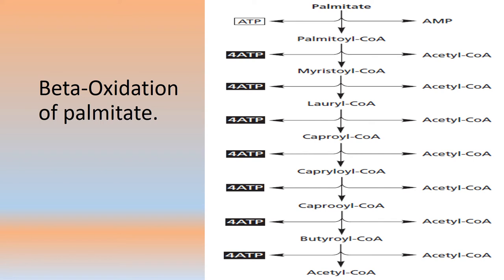1.5 ATPs are produced from FADH2 and 2.5 moles of ATPs from NADH oxidation, totaling four moles of ATP at each cycle completion. The remaining acyl-CoA undergoes the same series of reactions until the entire carbon chain is converted to acetyl-CoA, which then enters the citric acid cycle and is completely oxidized to carbon dioxide and water.